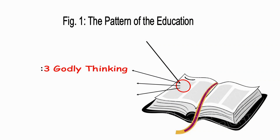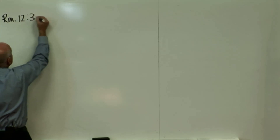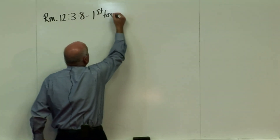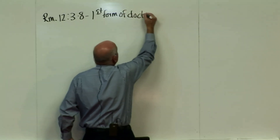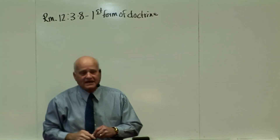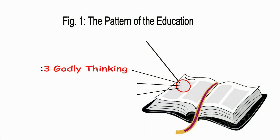We came right out of verse 2 and we're picking this back up now. In this first form of doctrine - Romans chapter 12, verses 3 through 8 - that is the first form of doctrine. Verse 3 is the godly thinking. The second part of the pattern is found in verses 4 and 5, and that is the godly living. That is the order we're going to encounter it all the way through the book of Romans - learning to do things God's way, concerning our conduct and behavior.